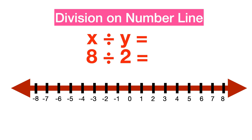Now we'll learn how to represent division on the number line. Since division is repeated subtraction, the subtraction should be repeated until you reach 0. We perform the subtraction by moving left. When 8 is being divided by 2, first mark the number line and plot the multiples of 2 starting from 0.